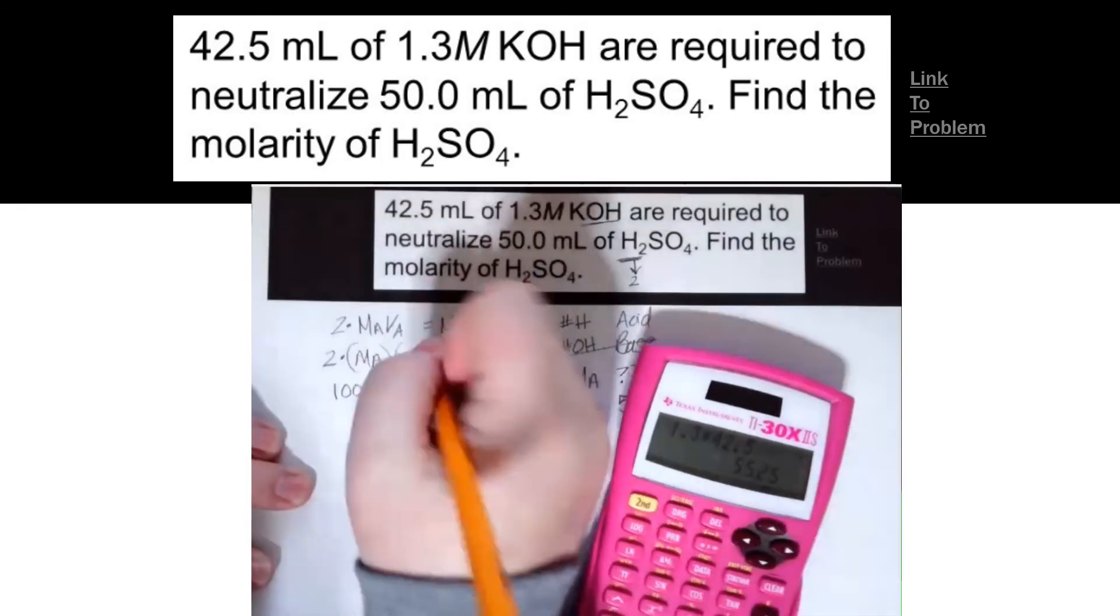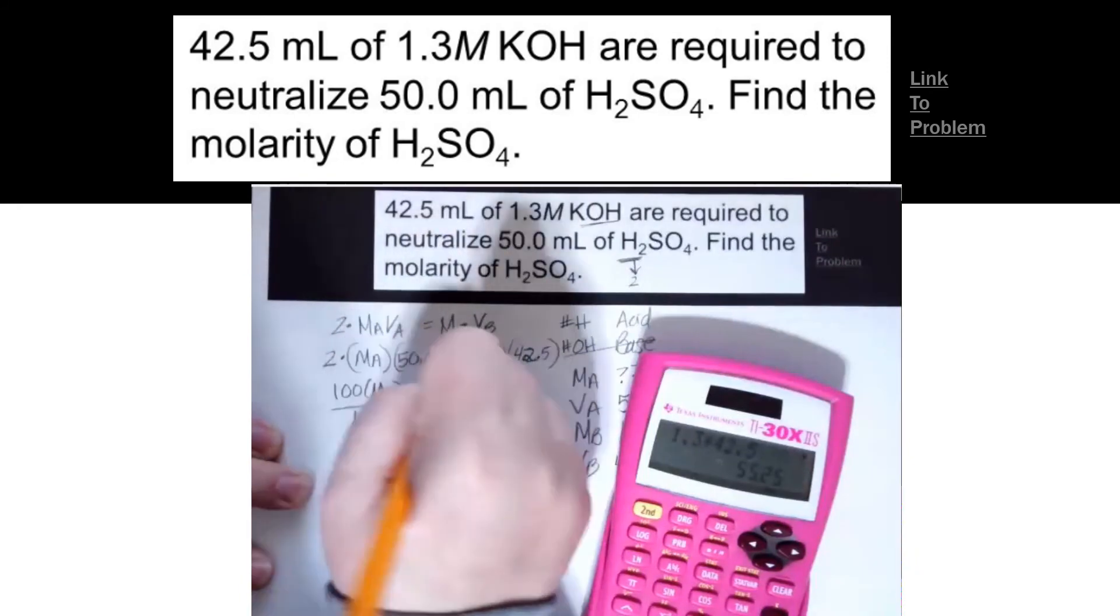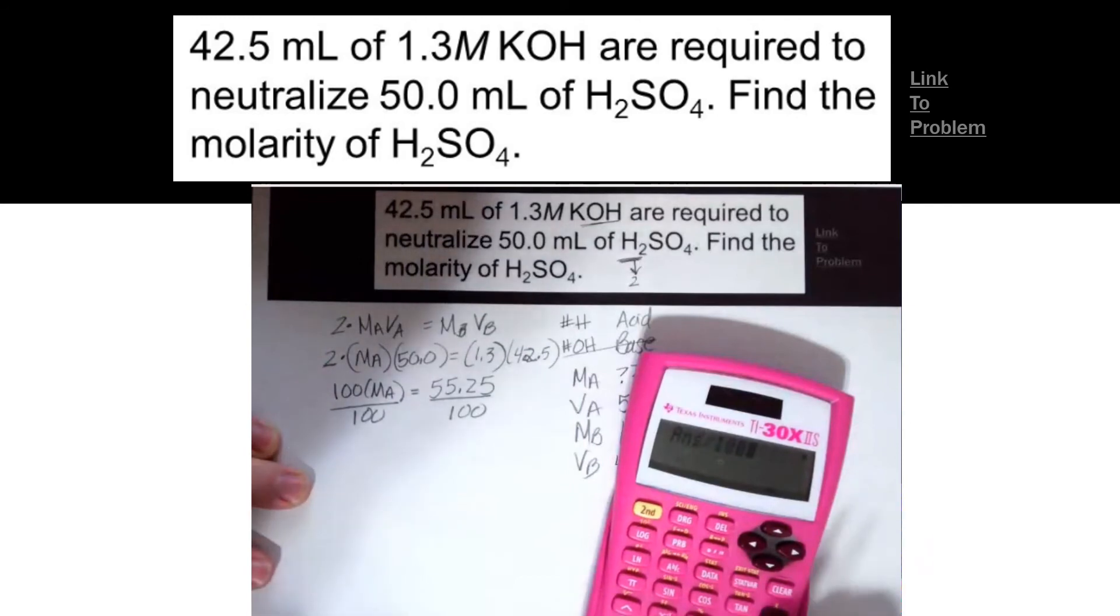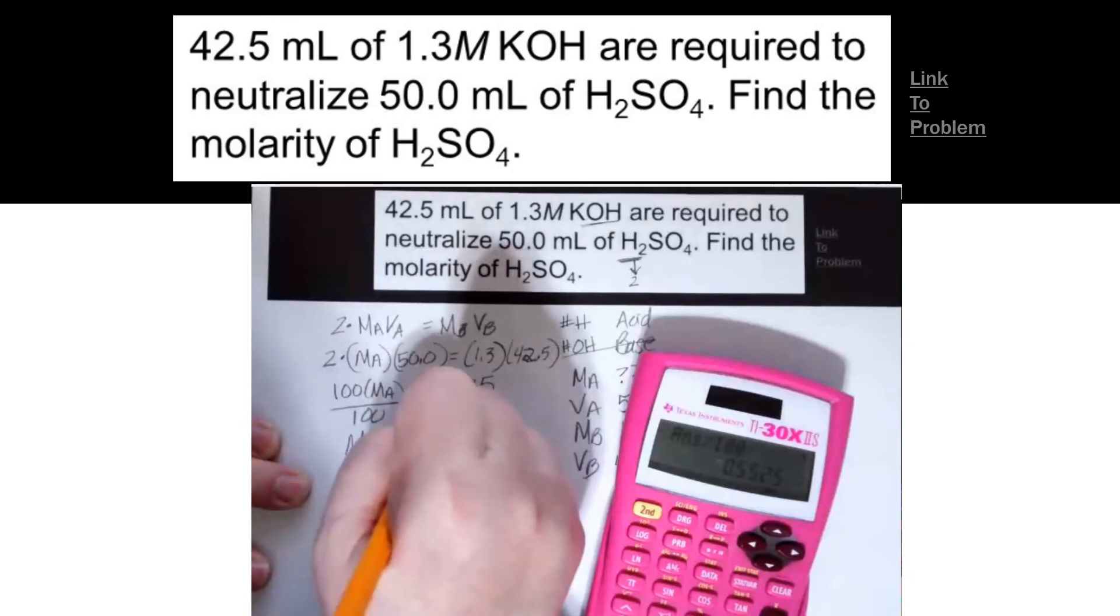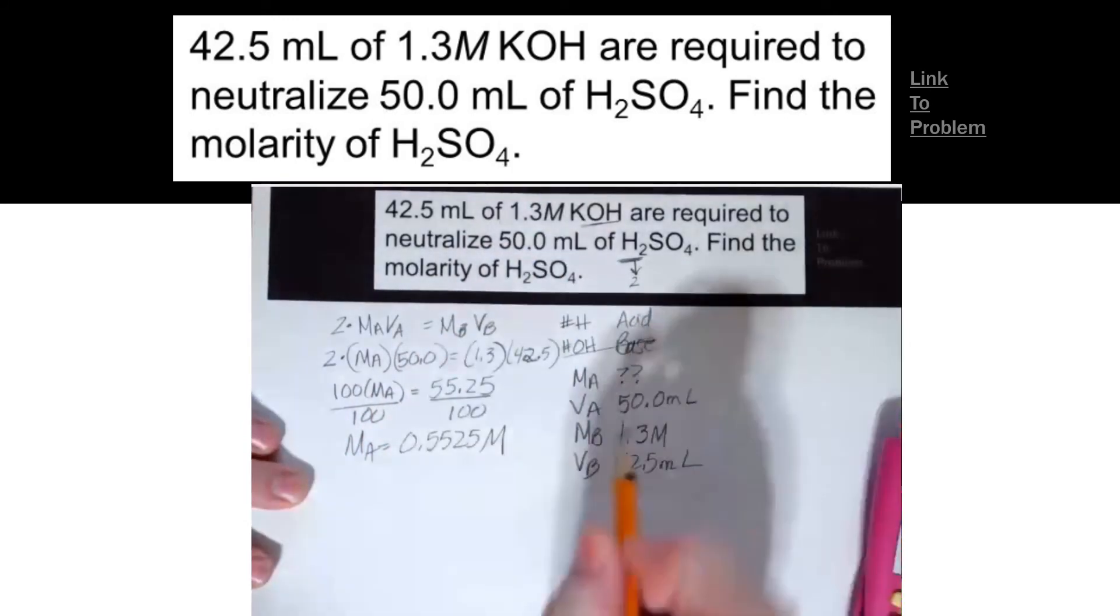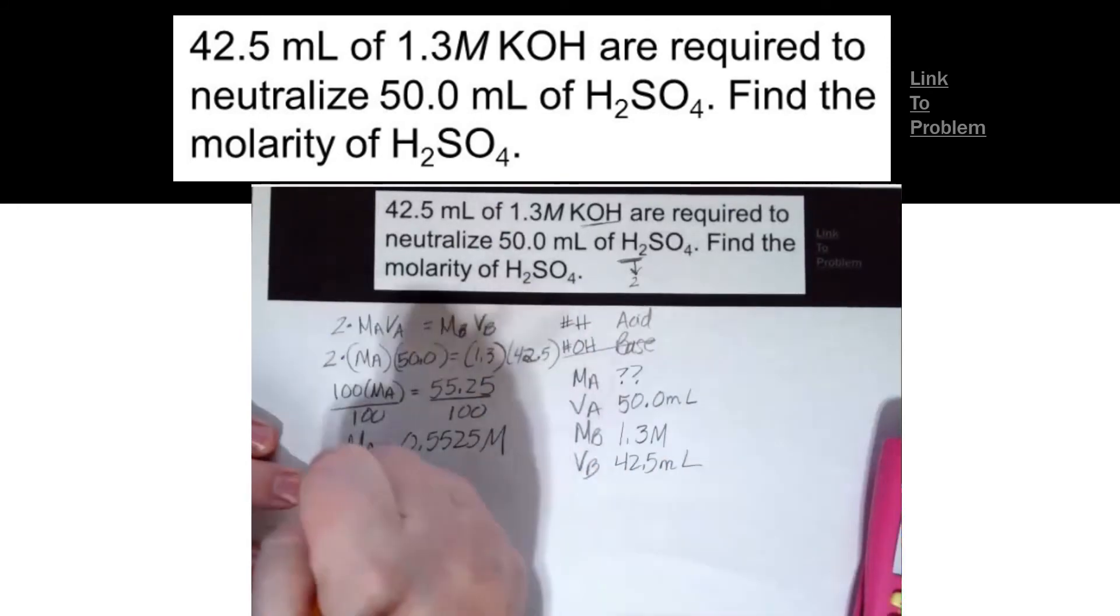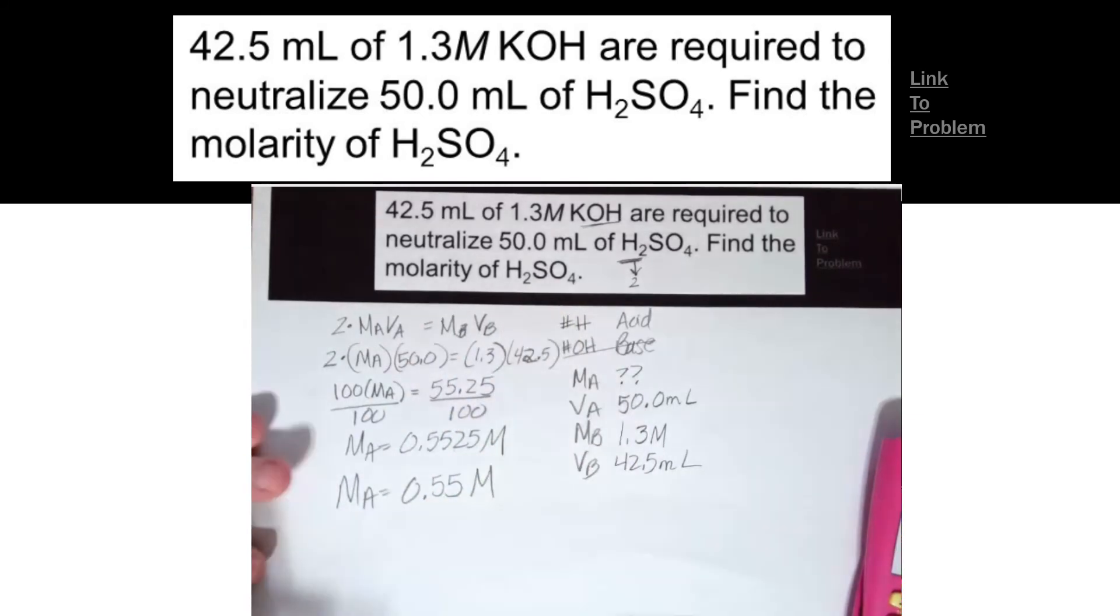So 55.25 divide both sides by 100. MA equals 0.5525 capital M, but three significant figures, two, three. So I only need two significant figures. So MA equals 0.55 molar.